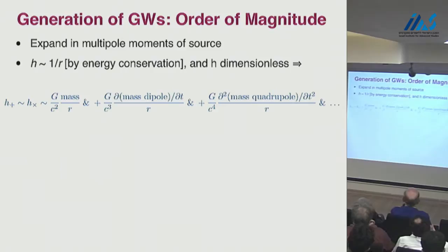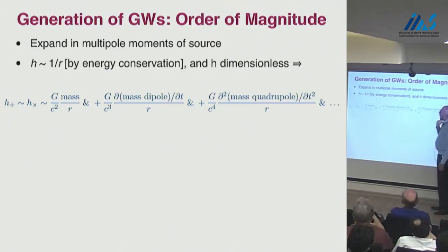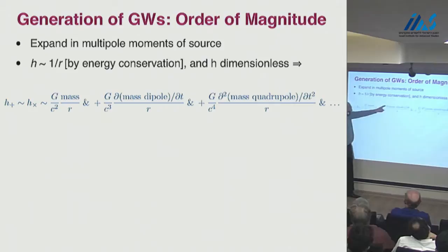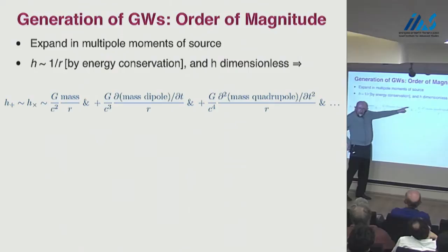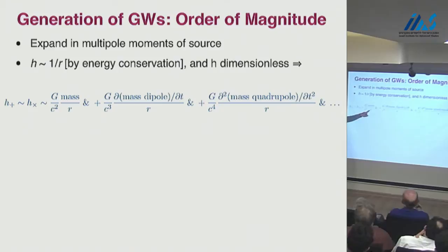A few remarks about the order of magnitude of gravitational wave strength. If I take the trace-reversed metric perturbation and split it up into multipole moments around the source in a slow-motion situation, then just on the basis of dimensional considerations — the field has to die out as 1/r — you'll have mass divided by r, a mass dipole moment divided by r, and a quadrupole moment second time derivative divided by r, with appropriate factors of G and c.